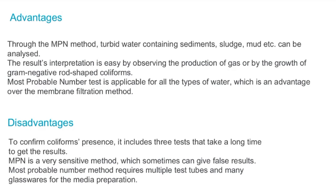The disadvantage is that we need to confirm results by performing three tests. If we have different types of coliforms, we need to test multiple times. Additionally, turbid water can be harder to analyze compared to the membrane filtration method.